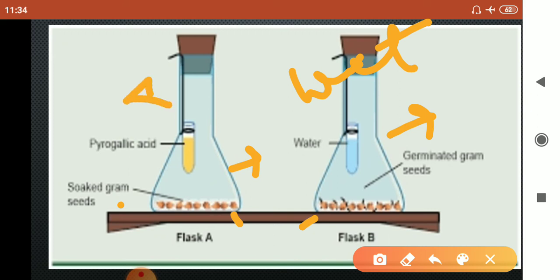We will hang a small tube in both flasks. We will put alkaline pyrogallic acid in one tube and plain water in the other tube.